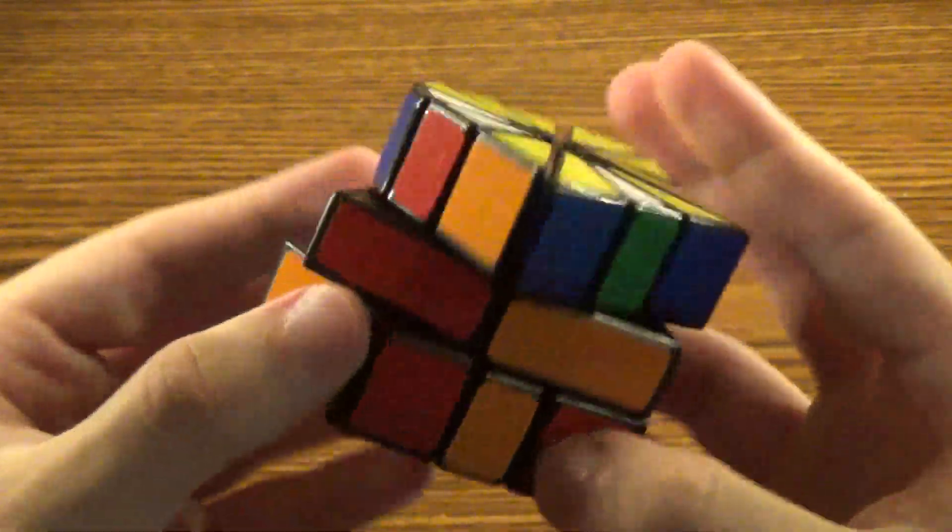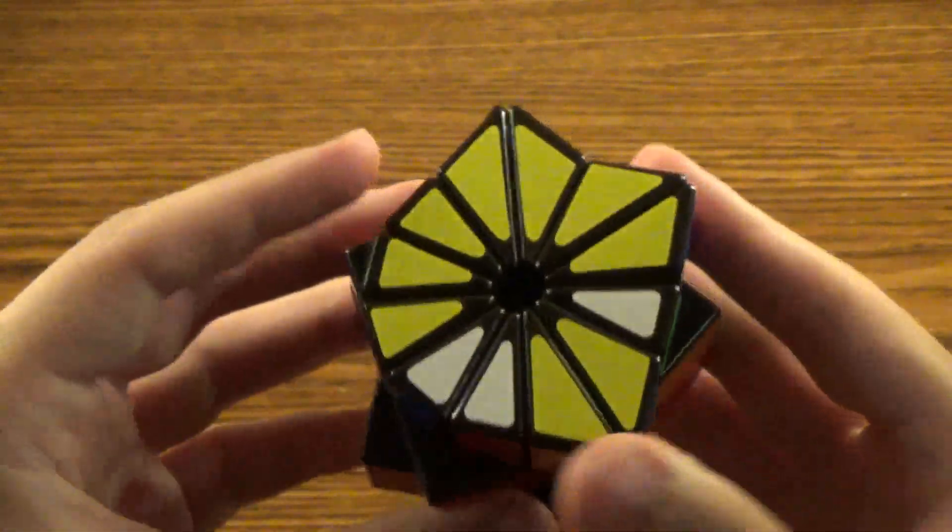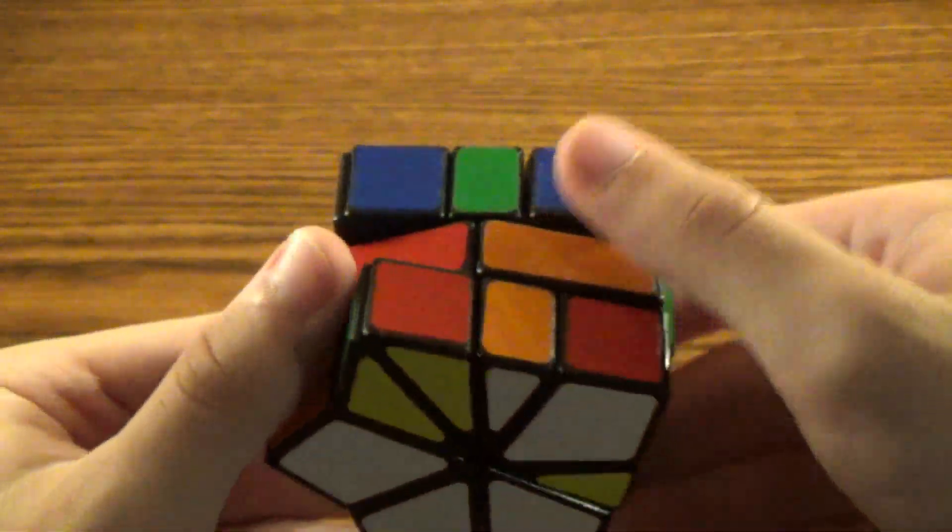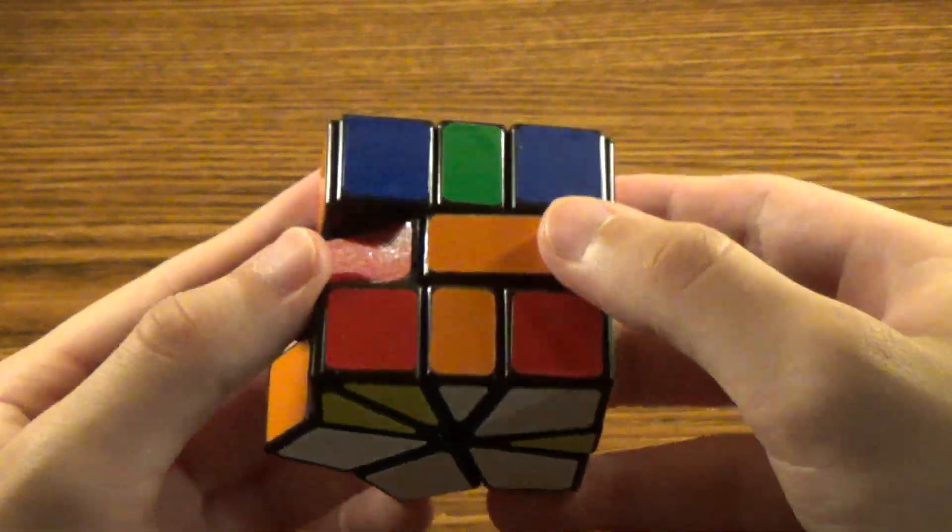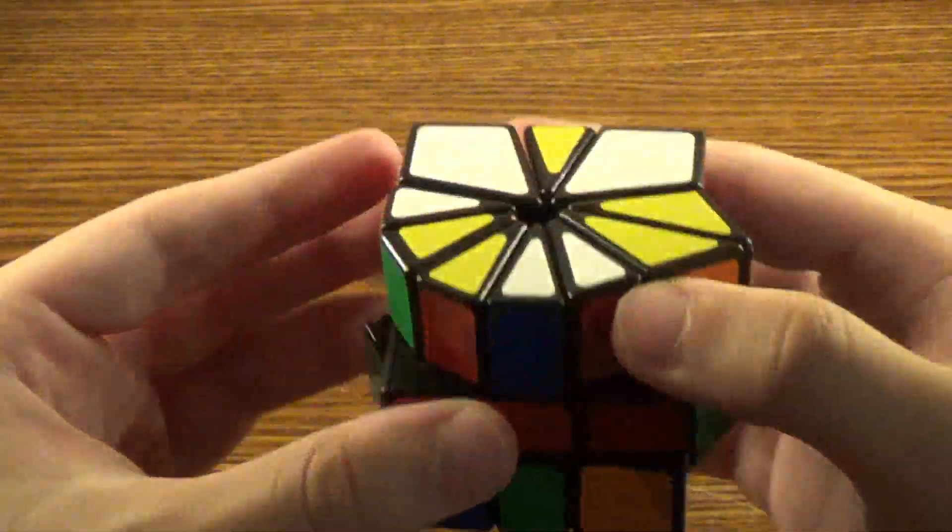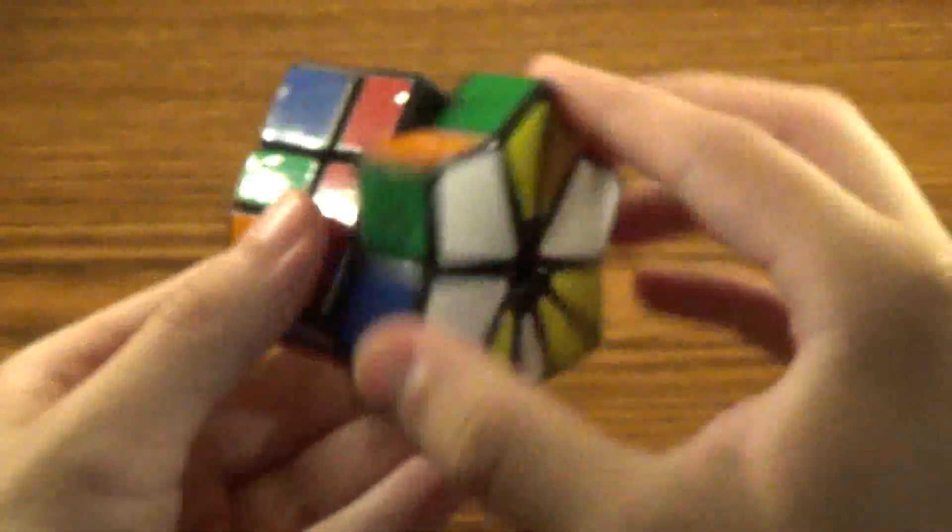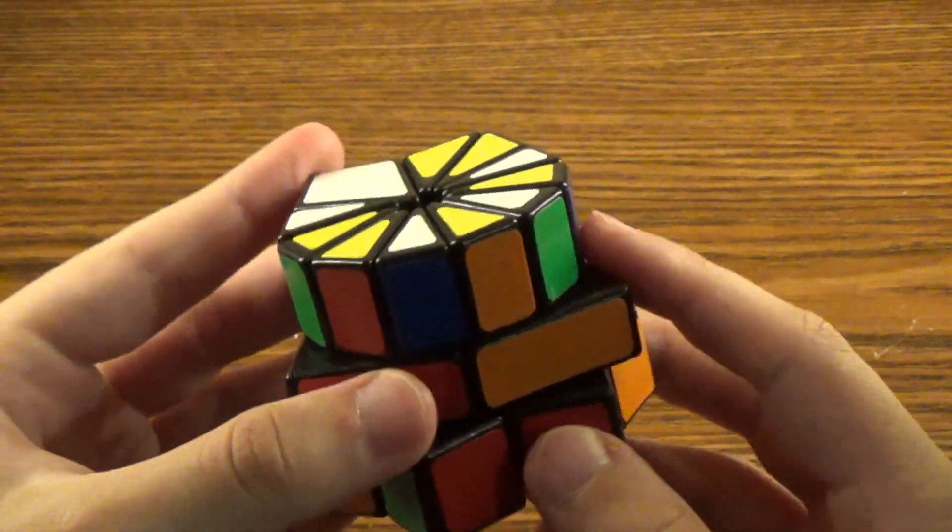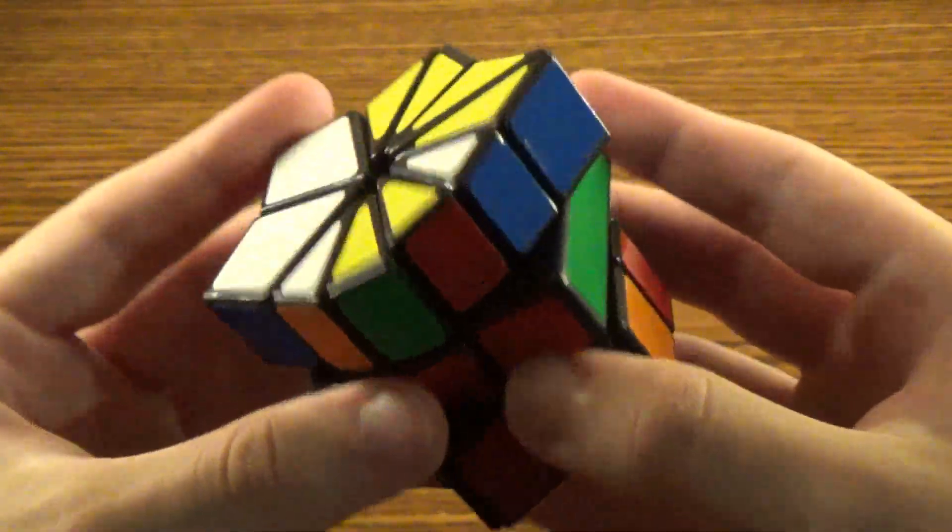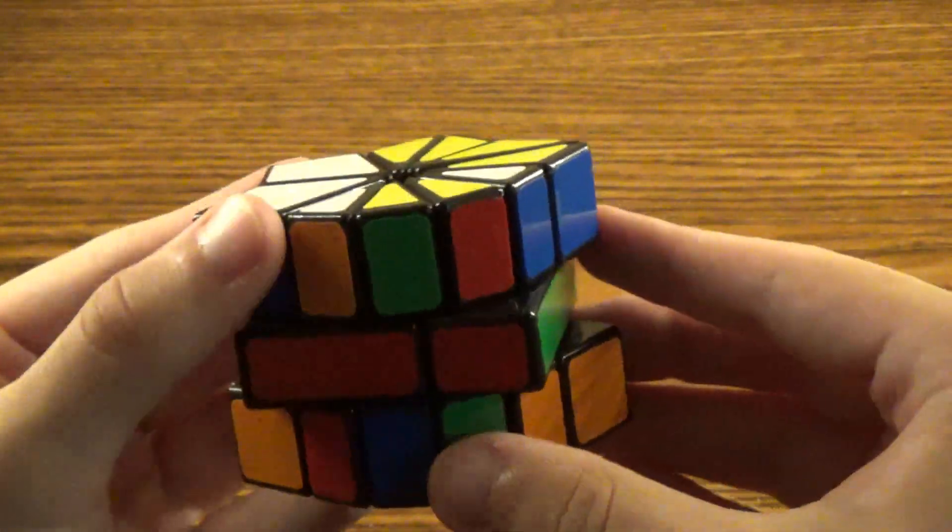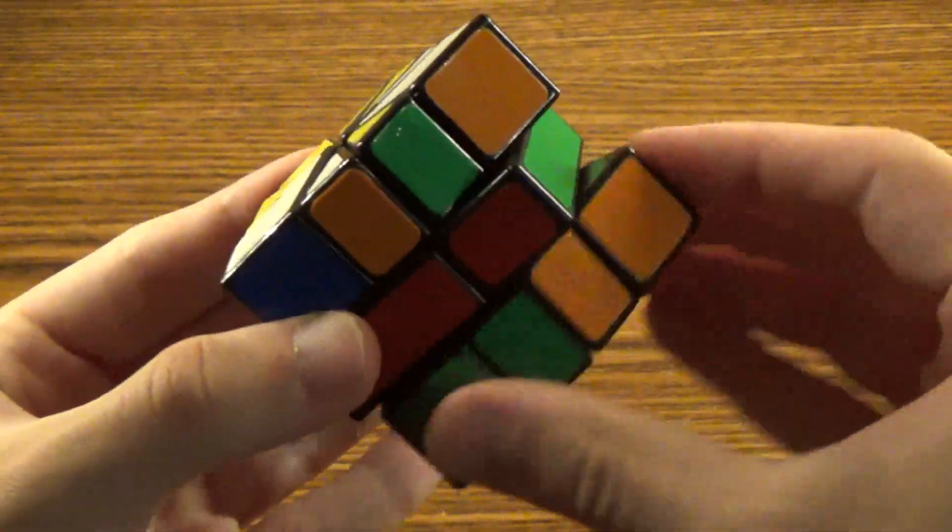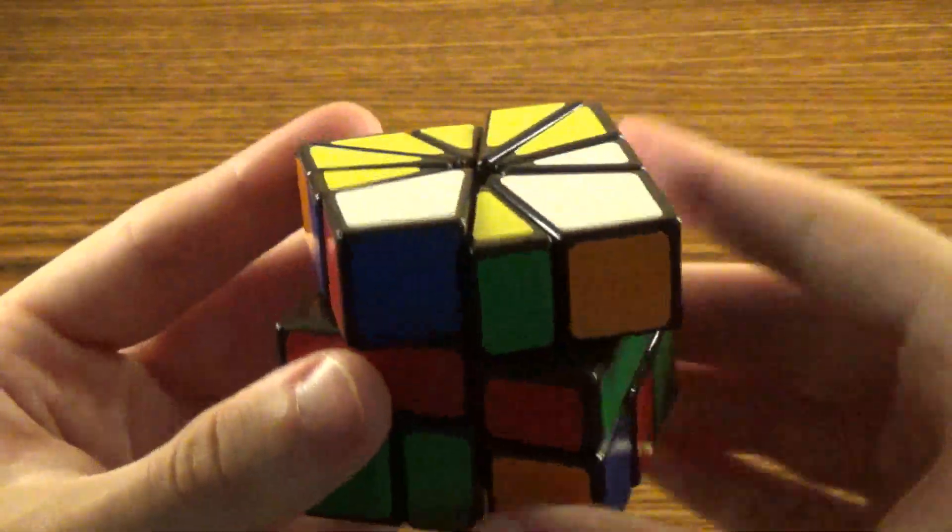So now I'm going to try and solve this back into the normal cubic shape using methods that are basically very similar to the ones you'd use on just any Square-1. There we have the position where all of the edges are on the same face, so now it's really simple to just break them apart and get the cubic shape. There we are.